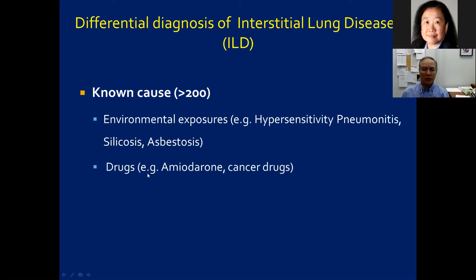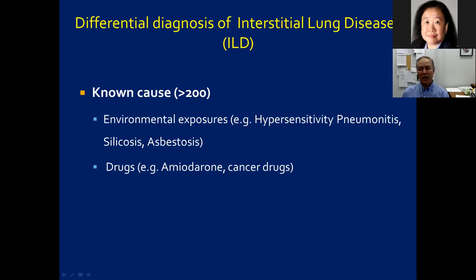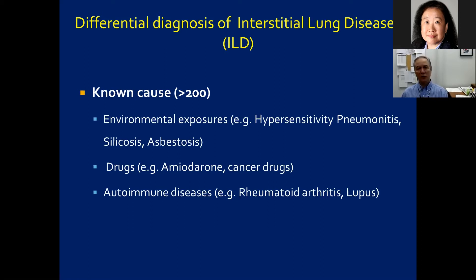Another major group of causes involves drugs — amiodarone is commonly used for arrhythmias, which cardiologists find effective but respirologists dislike because it frequently damages the lungs. Many cancer drugs and other medications can also cause ILDs. A third large group is autoimmune or connective tissue diseases, such as rheumatoid arthritis and lupus.